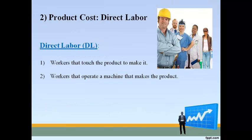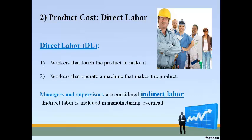Direct labor is the second product cost. Direct labor consists of workers who make the product, either by manually assembling the products or by operating the machines that make the products. Supervisors are not directly involved in making the products and are therefore not direct labor; their costs are included in manufacturing overhead.